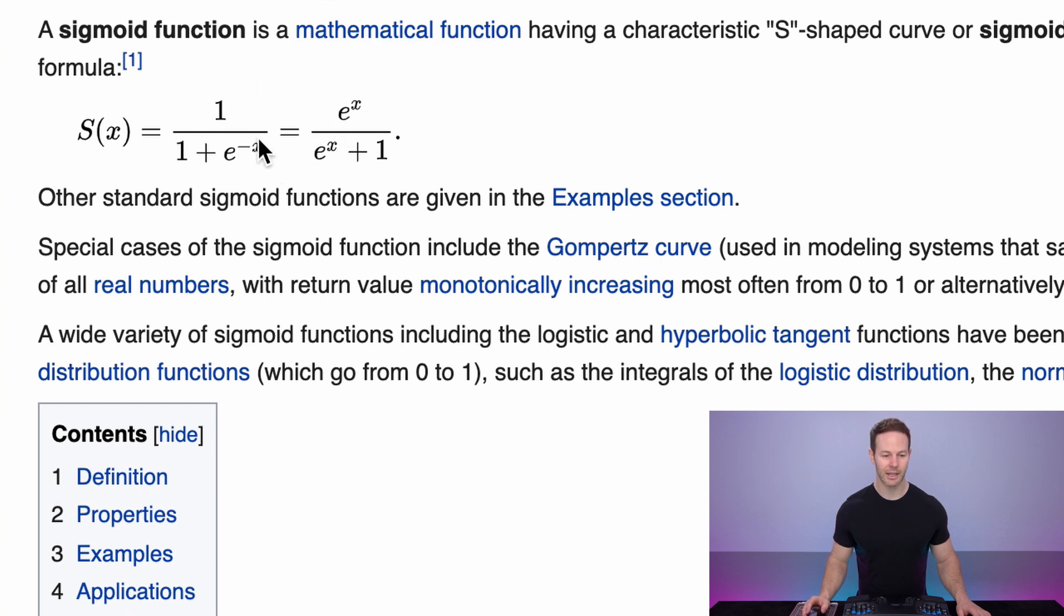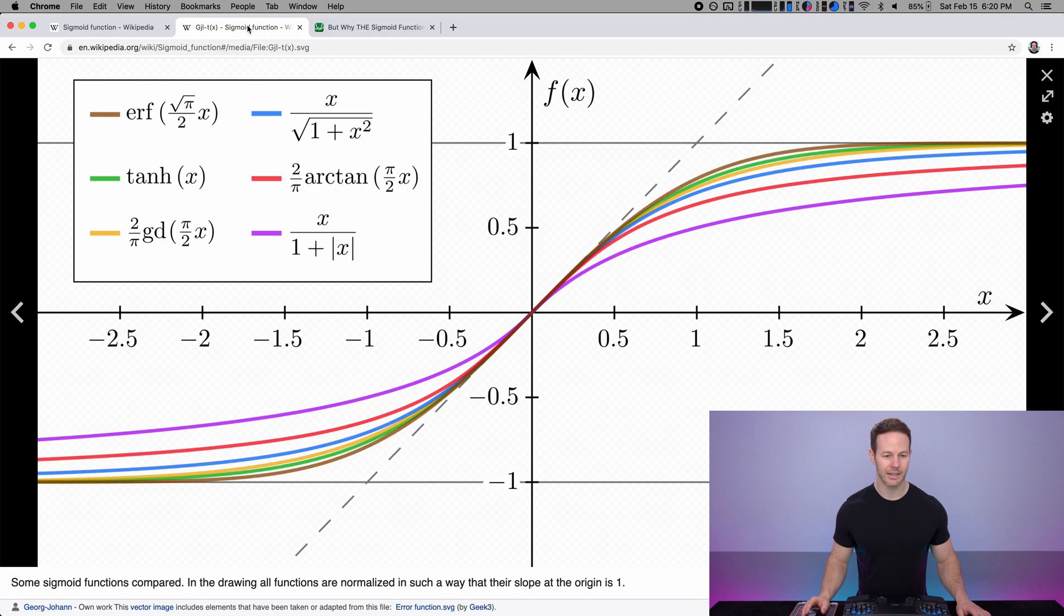And the question is why do we use this equation instead of any of these alternatives, which similarly look to do the same thing, which is convert numbers on the number line into the range of 0 to 1. Here in this diagram they're converting them into the range of negative 1 to 1, but if we just shift these up and squash them down a little bit, they can be used equally well as converting numbers into the range of 0 to 1.